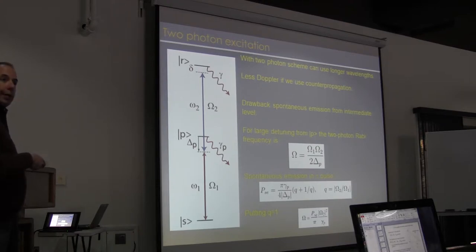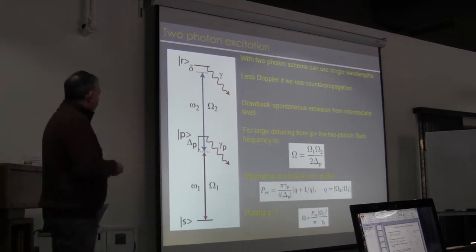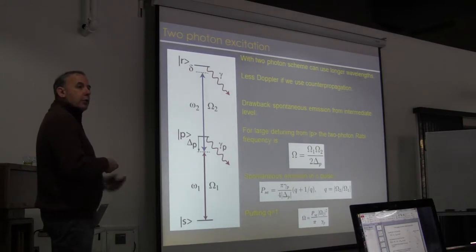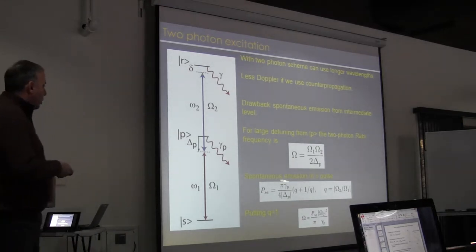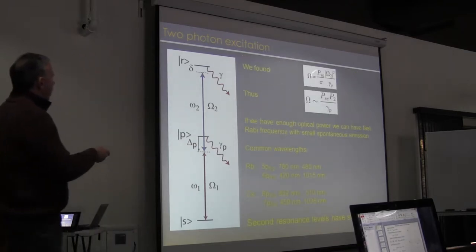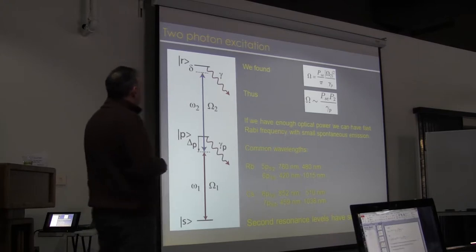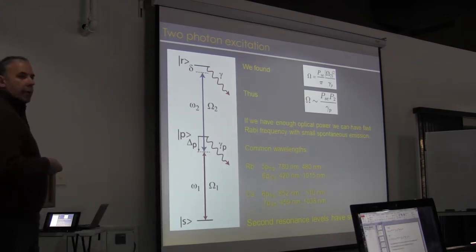So that spontaneous emission probability is minimized, and that's an optimal point for quantum operations, by setting the one-photon Rabi frequencies equal. And that's also advantageous for minimizing Stark shifts, as we'll see in a moment. So we set the one-photon Rabi frequencies equal, and then we get an expression for the Rabi frequency relative to the spontaneous emission probability and the one-photon Rabi frequency. So that's this expression up here, and therefore the Rabi frequency is proportional to the square root of the spontaneous emission probability times the power in your laser divided by the detuning. So if we have enough optical power, we can have fast Rabi frequency with small spontaneous emission.